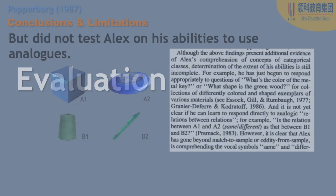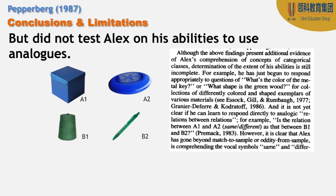As per evaluation, one thing they said as a limitation was that in the future they could test Alex on his ability to use analogues. What does this mean? You see the relationship between items A1 and A2 — their sameness is color — just as the sameness between B1 and B2 is also color. The next level would be to ask Alex: is the relationship between these two items the same as the relationship of sameness of these two items? So is he able to make analogies? For example: fingers are to hands as toes are to feet.